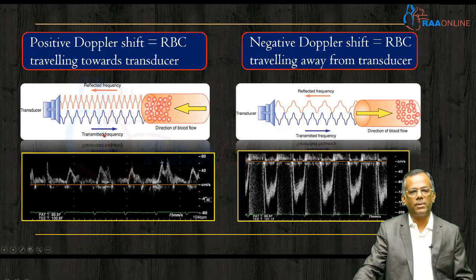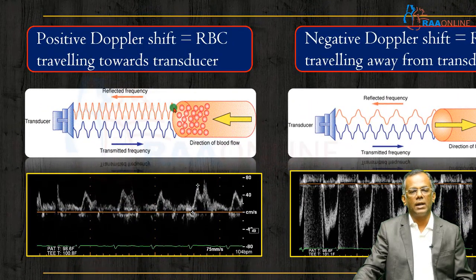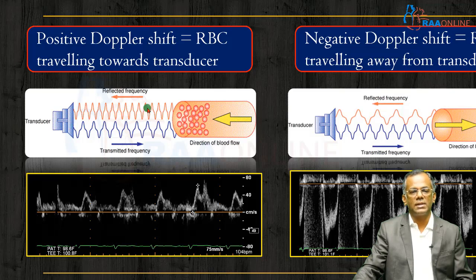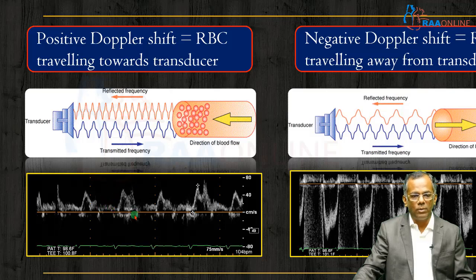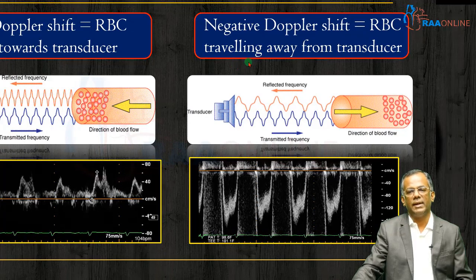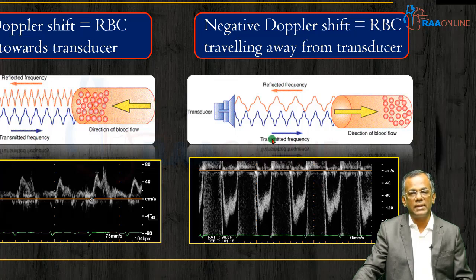A positive Doppler shift occurs when RBCs are traveling towards the ultrasound transducer. This causes the reflected frequency to be greater than the transmitted frequency, and we see it on echocardiography as a Doppler display above the baseline — meaning RBCs are moving towards the transducer. A negative Doppler shift is when RBCs move away from the transducer; here the transmitted frequency is greater than the reflected frequency, and it appears as a spectral Doppler display below the baseline.